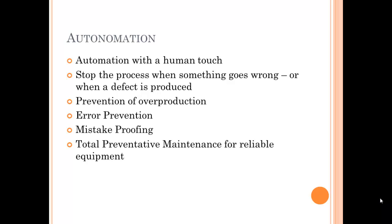Autonomation — it's automation with a human touch. We've talked about the kinds of things that people are better at than automation, such as tasks requiring high dexterity. Autonomation also focuses on stopping the process when something goes wrong and a defect is produced. This human touch prevents overproduction — it's an error prevention method, mistake proofing. A common tool is a go/no-go template: rather than making a measurement and a judgment call, it is strictly yes or no. And again, total preventative maintenance supports reliable equipment.